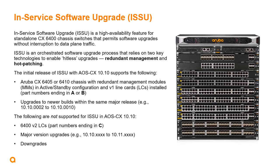The initial release of ISSU in AOS CX 10.10 supports upgrades under the following conditions: an Aruba CX 6400-5 or 6410 chassis with redundant management modules in an active-standby configuration, and version 1 line cards installed and operating normally. Version 1 line cards have a part number ending in the letter A or B. Upgrades to newer software versions within the same major release — for example, 10.10.2 to 10.10.10 — are supported. ISSU does not support version 2 line cards (part numbers ending in C), major version upgrades (e.g., 10.10.10 to 10.11.1), or downgrades to any software version older than what the switch is currently running, even within the same major release.